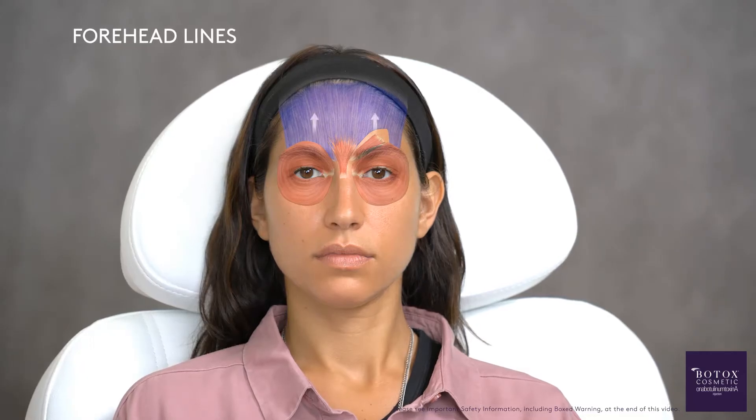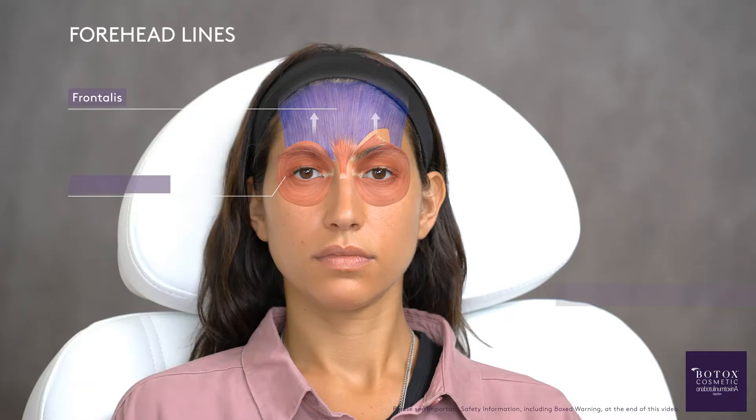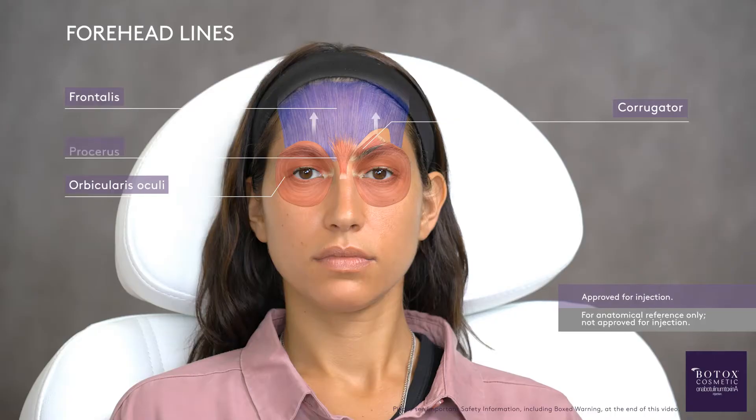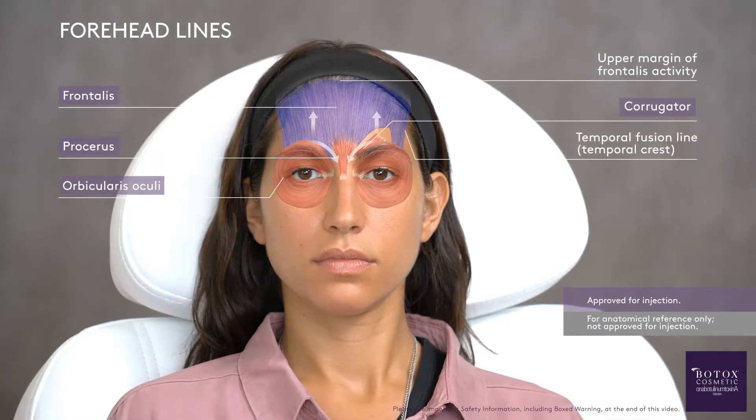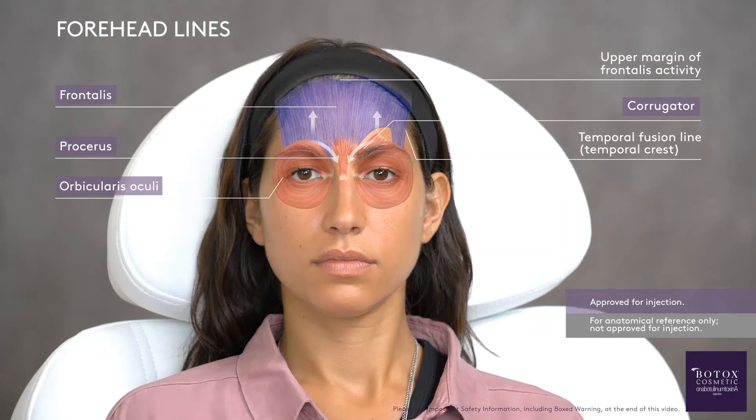Muscles of the upper face are interrelated and can affect results. Contraction of the frontalis muscle draws the eyebrows superiorly and creates horizontal forehead lines. Resting eyebrow position is a balance between opposing forces of the frontalis and depressor muscles — orbicularis oculi, corrugator, and procerus. Injecting the frontalis but not the depressors of the glabellar may disrupt this natural balance, leading to suboptimal outcomes and possible brow ptosis. You'll also want to consider avoiding Mephisto or Spock lateral brow elevation by injecting both medial and lateral frontalis.